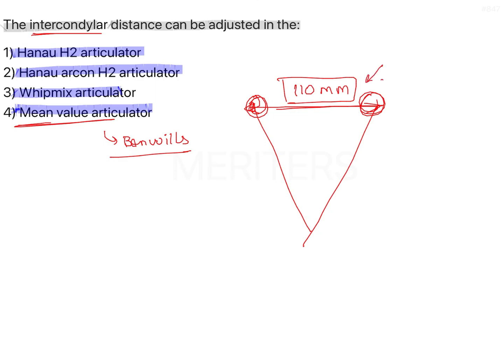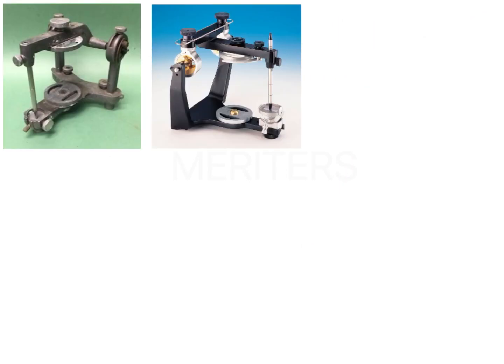Now, in which articulator can this be adjusted? Not all semi-adjustable articulators will have this feature, so we need to know which articulator has this specific feature. The first option is the Hanau H2 Articulator. Here, the intercondylar distance is fixed and cannot be changed.